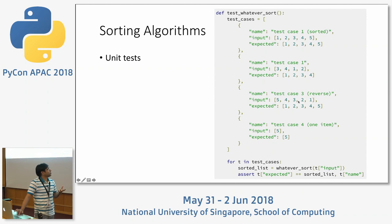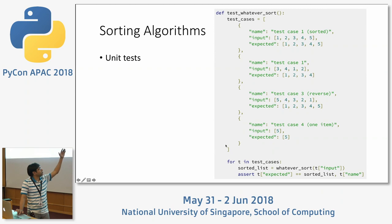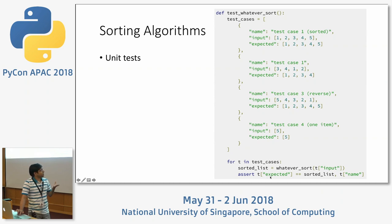For reversed order like [5,4,3,2,1], the expected output is still [1,2,3,4,5]. And there is the edge case of sorting with only one item — the expected output is that same item. In Python, you iterate through the test cases and for each one use an assert to check whether the expected list matches the sorted output from your function.